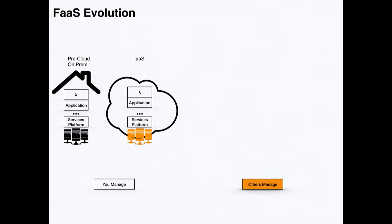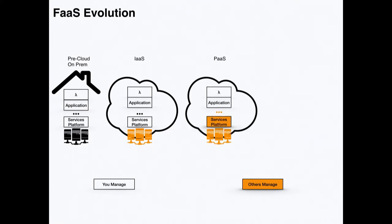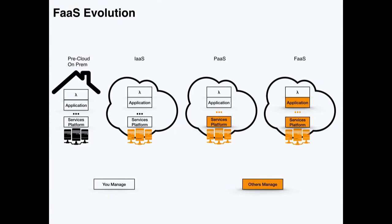When the industry moved to Platform as a Service, we abstracted away the services platform as well, but you still owned the application, the business logic, and its operations. Then finally, a new paradigm is emerging with Function as a Service, where everything is managed for you except the business logic you want to write. For our client engineers, this is really important — they don't care about infrastructure or platform; they just care about the business logic specific to their app.